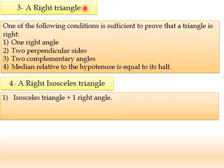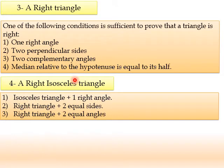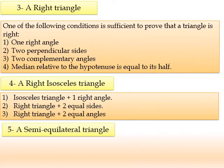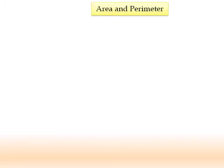What about a right isosceles triangle? If our triangle is isosceles and we have one right angle, then it is a right isosceles. We can start from isosceles and prove it is a right isosceles triangle by having a right angle. Or, if a right triangle has two equal sides or two equal angles, then it is a right isosceles triangle. A semilateral triangle is the easiest one — it is a triangle that has 30, 60, and 90 degrees.